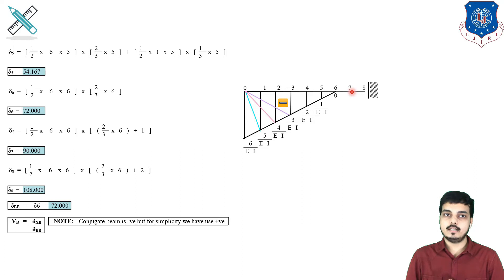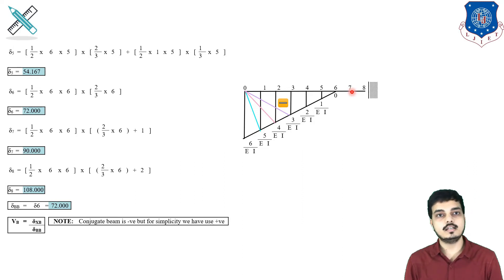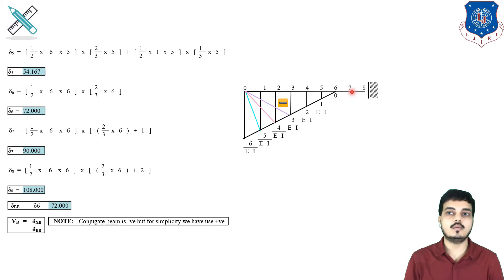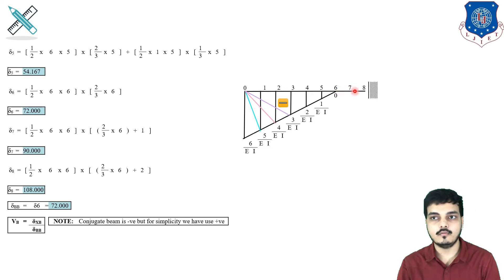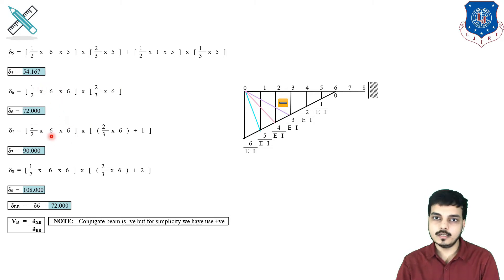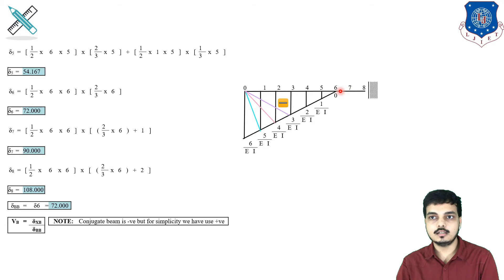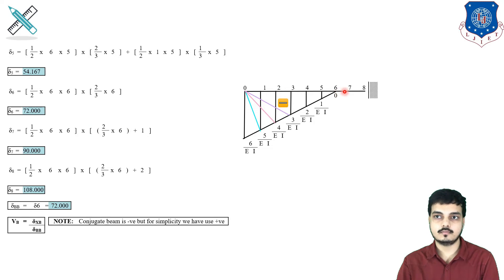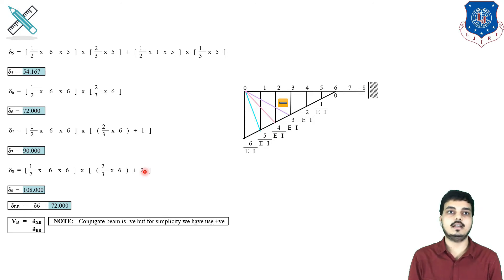For delta 7, on the left-hand side there is a triangle of length 6 meters and height 6 meters, but it is shifted 1 meter. So the area is the same as for delta 6 (1/2 × 6 × 6), but the CG is 1 + 2/3 of 6 from the reference point. For delta 8 the distance becomes 2. This is how we calculate delta 7 and delta 8.